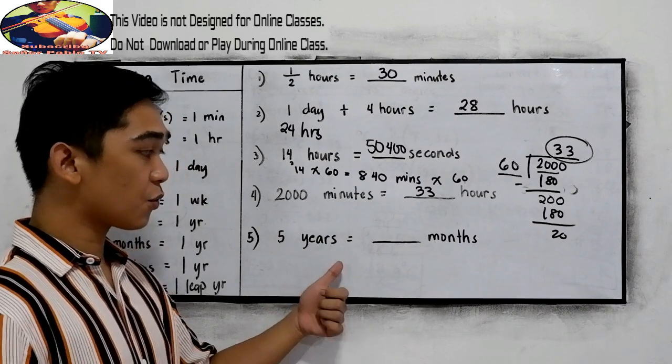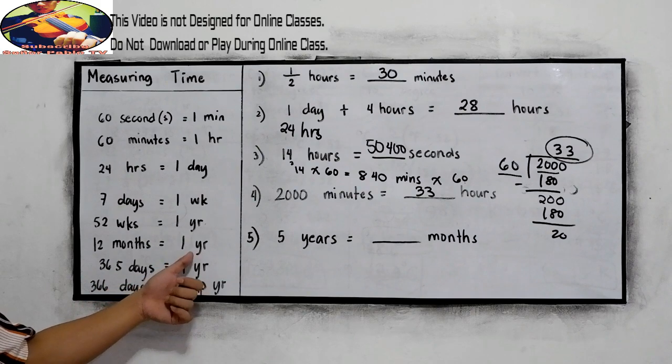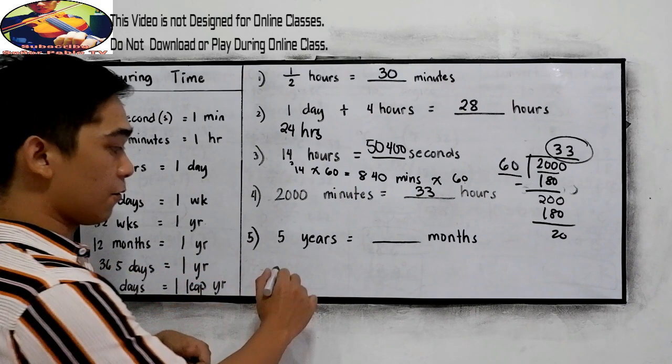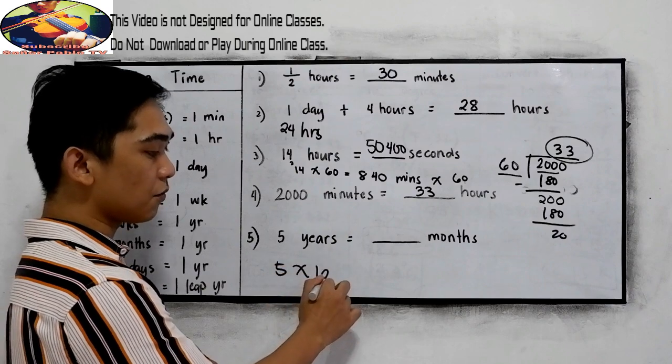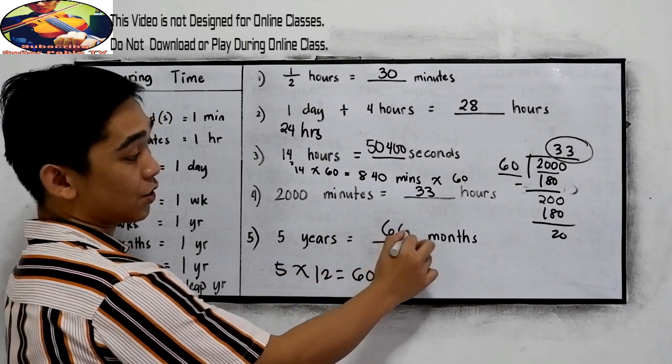5 years is equal to how many months? So we just need to multiply 5 times 12 and that will give us 60 months.